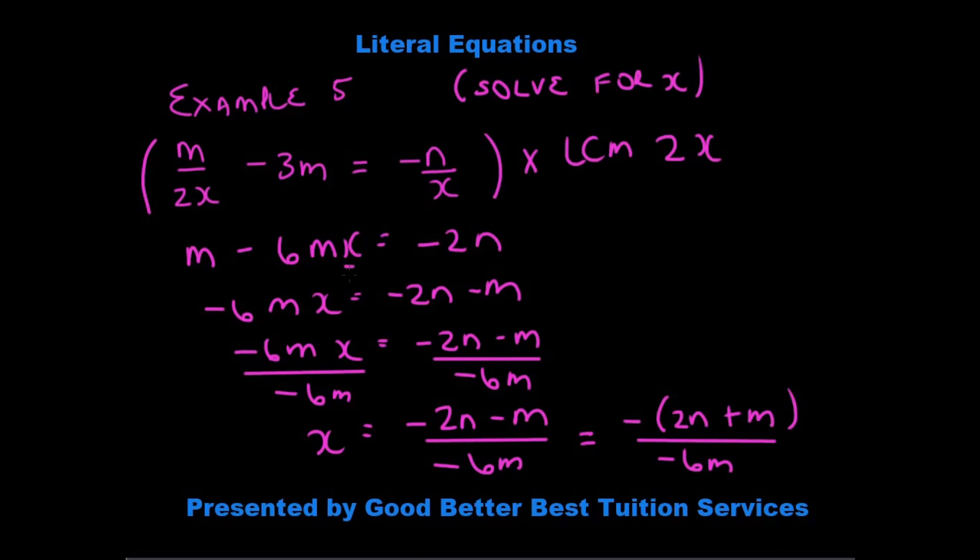We're solving for x. In other words, we need to get rid of the m, so we take it over to the right-hand side. Leaving us with minus 6mx is equal to minus 2n minus m. And what are we going to do now? To get the x alone, to isolate the x, we need to divide by whatever is in front of the x.